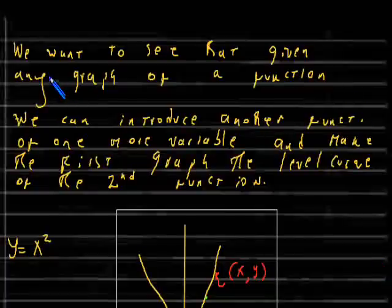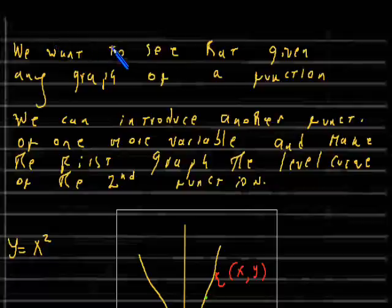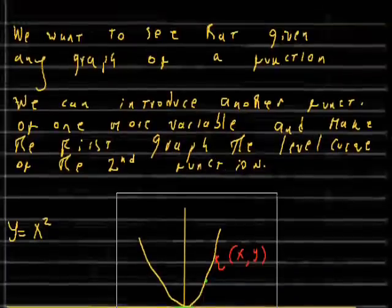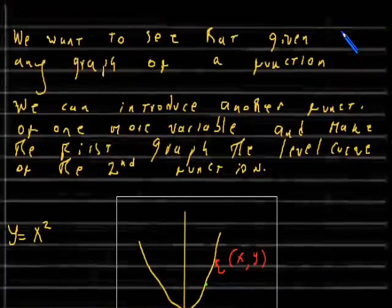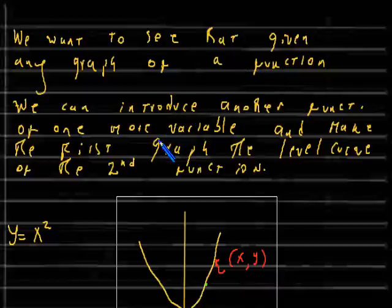So we're in CommStudio. What I want to do now — I already thought I had finished this video and shot it without actually having CommStudio running. So what I want to do is show that given any graph of a function, we can introduce another function of one more variable and make the first graph the level curve of the second function. That's what we want to show.